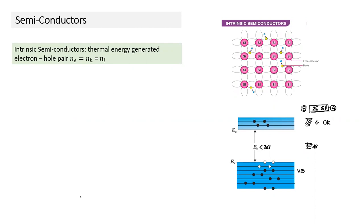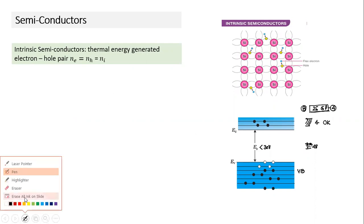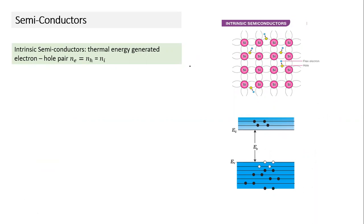We talk of Ne and NH. Ne is the number of electrons per unit volume in the conduction band — only a small fraction of valence electrons move into the conduction band. NH is the number of holes per unit volume in the valence band. In an intrinsic semiconductor, both are equal, because they are formed in pairs when an electron moves from valence to conduction band. This equal concentration is called Ni.